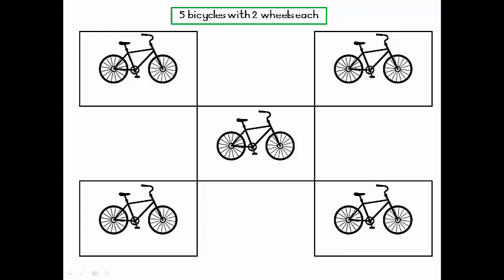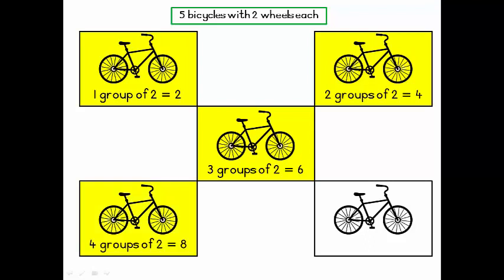We can also say: I have one group of two wheels, that gives me two. I have two groups of two wheels each, and I have four. Three groups of two equals six. Four groups of two equals eight. And five groups of two equals ten.